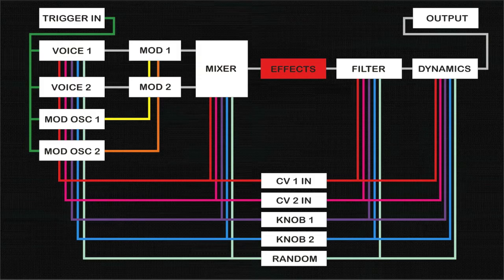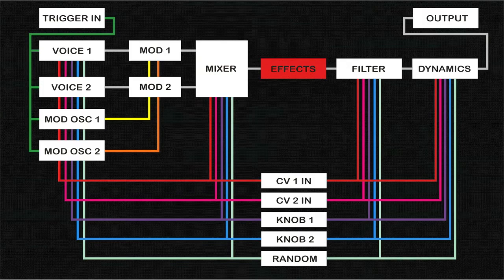Each effect allows you to adjust the bit depth of the effect from 1 to 12 bits and further adjust the resample rate. At the highest bit and resample rates, audio will pass through the effects section unaffected.